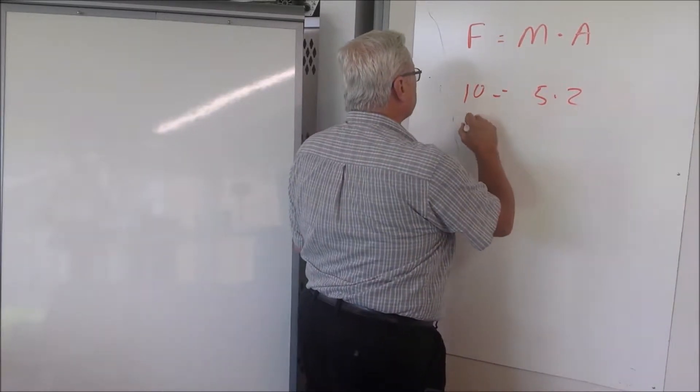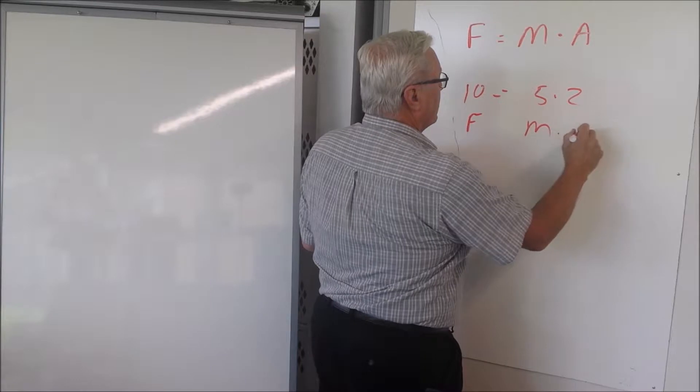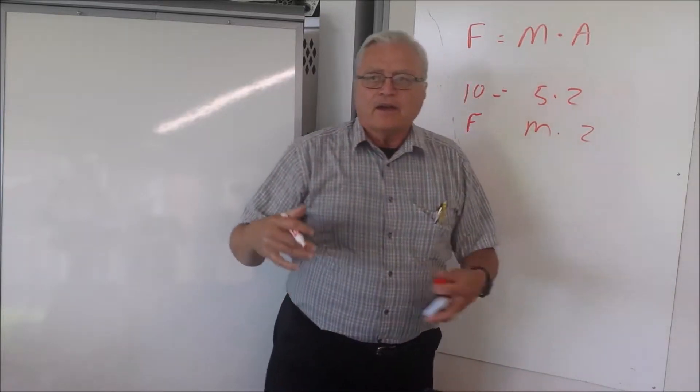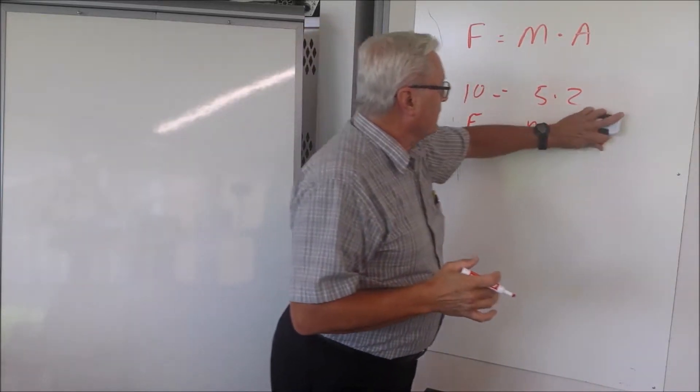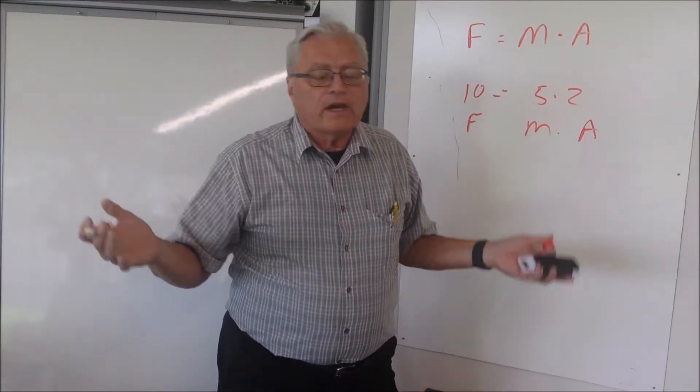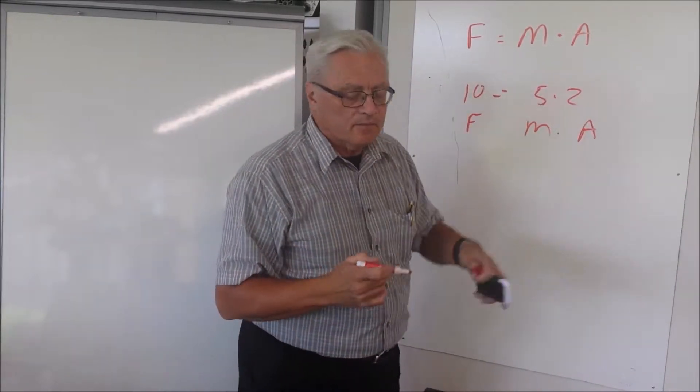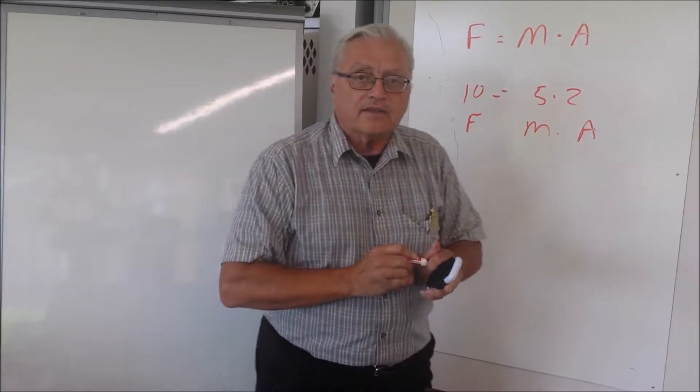If instead of f equals ma, all I told you was 10 equals 5 times 2, what does that mean? That's numbers. Without understanding what those numbers mean, it's meaningless. I could say I have a force of 10 and a mass of 5 and an acceleration of 2, but it's this that has the meaning, not the numbers. That's why not the numbers.